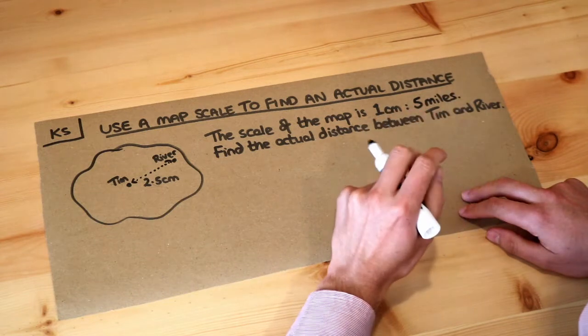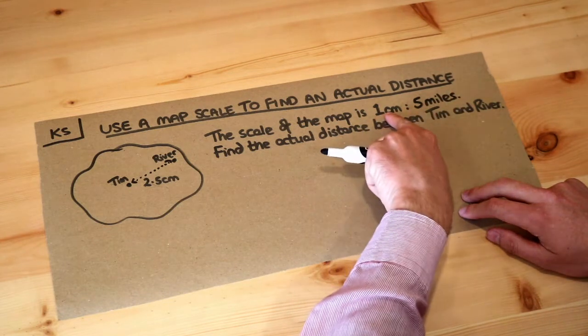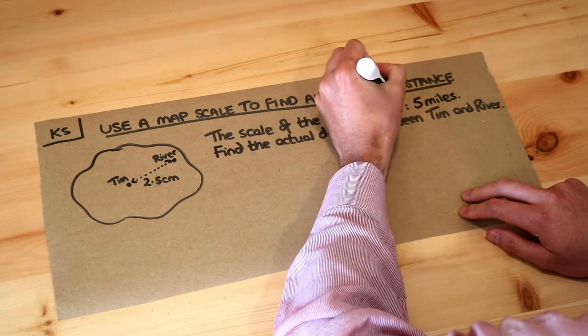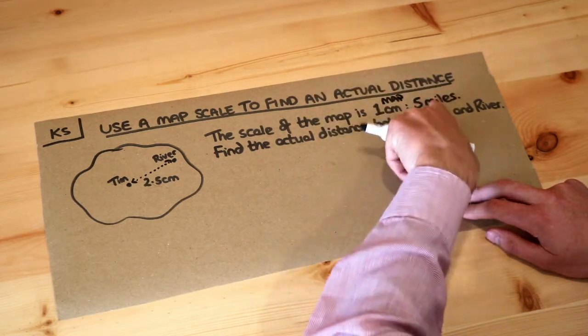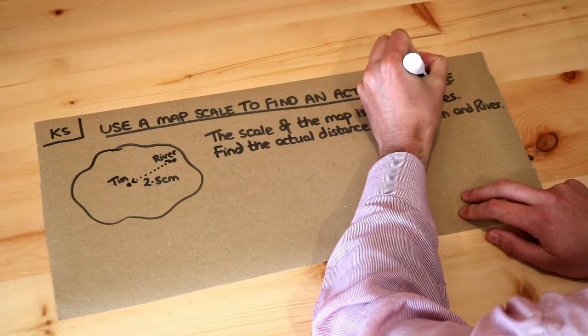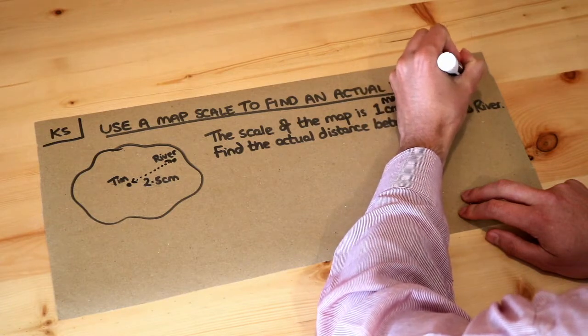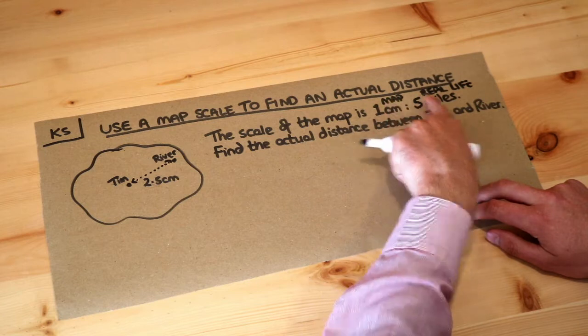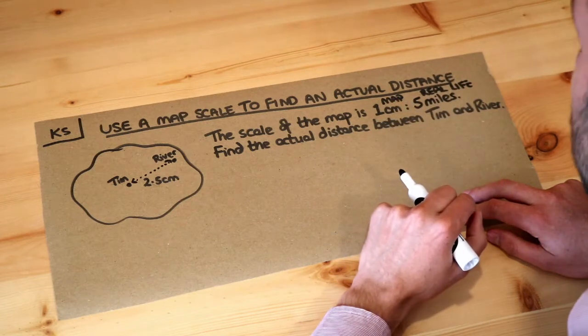This is a ratio and what this is basically saying is that for each one centimeter on the map this represents five miles in real life. One centimeter on the map represents five miles in real life.